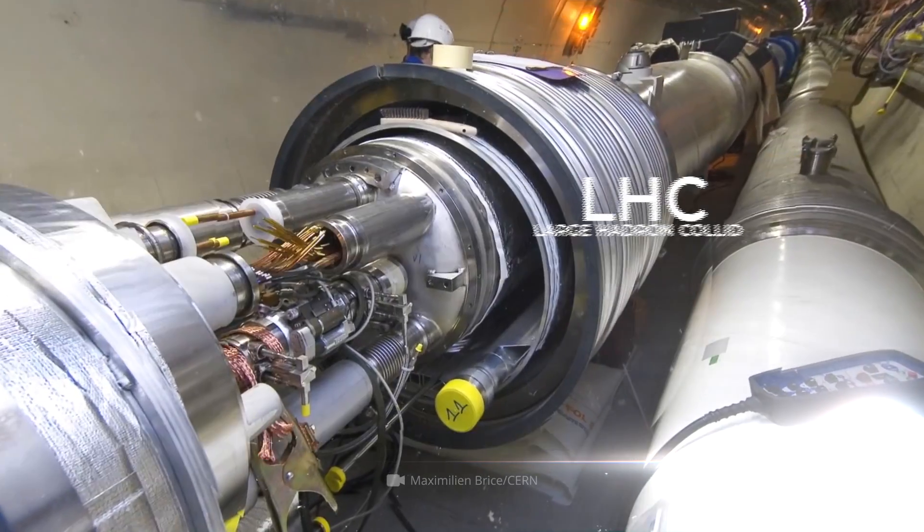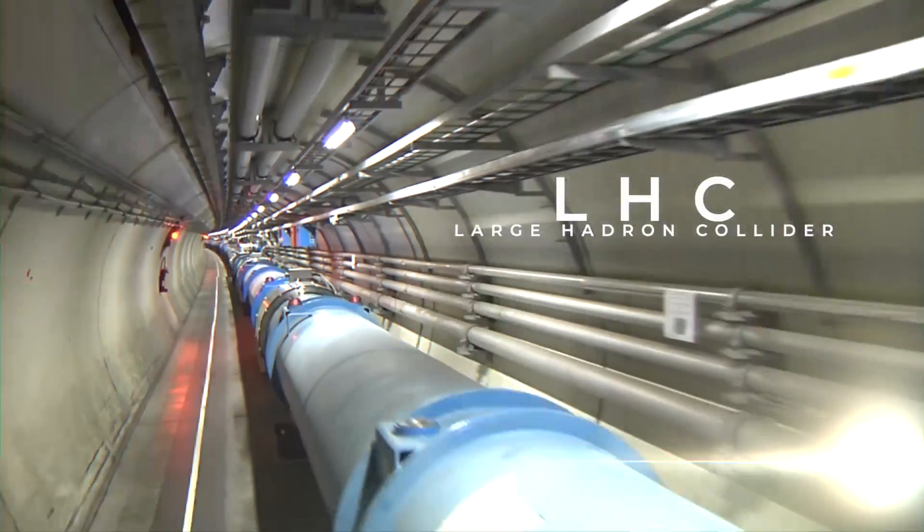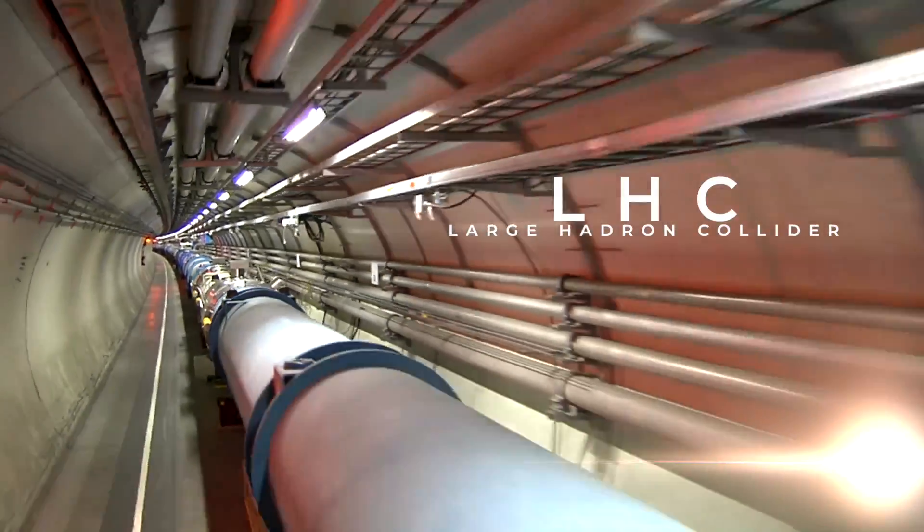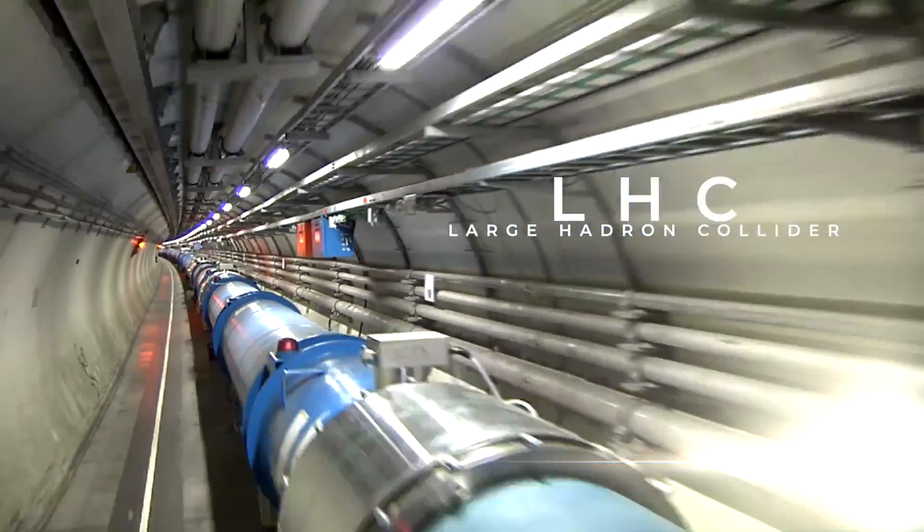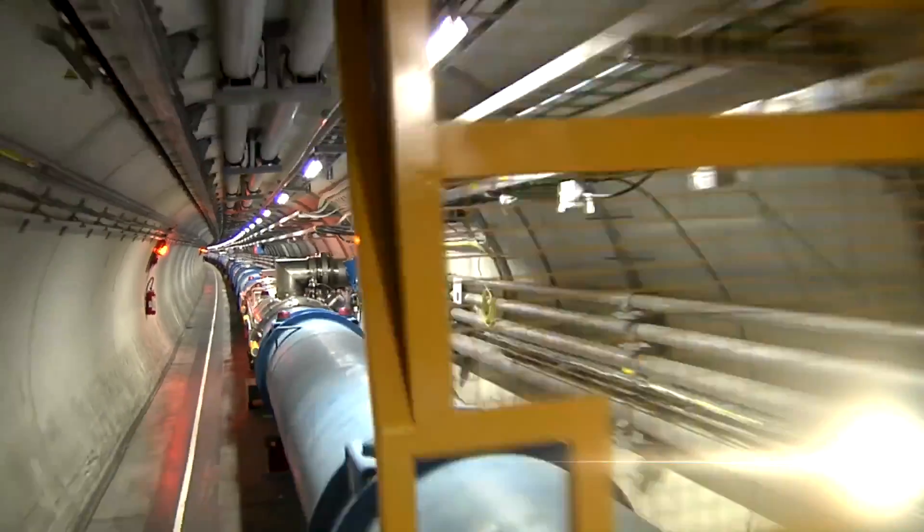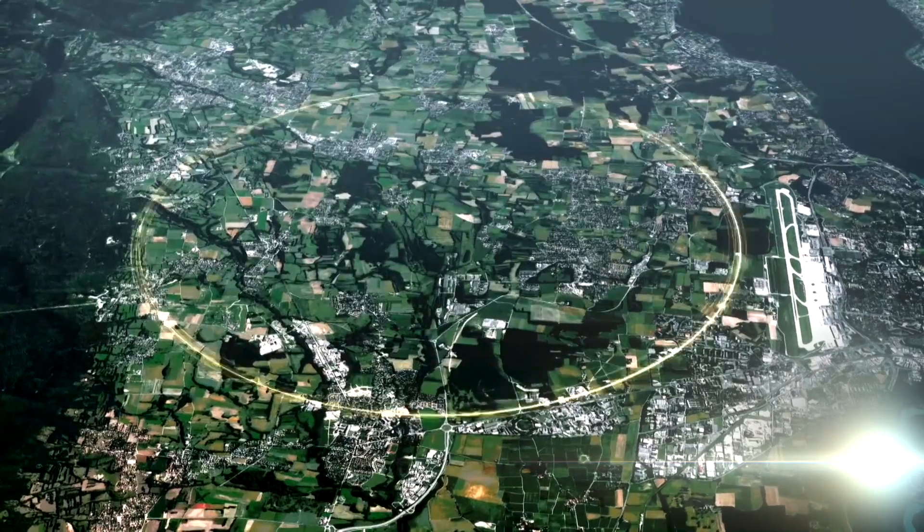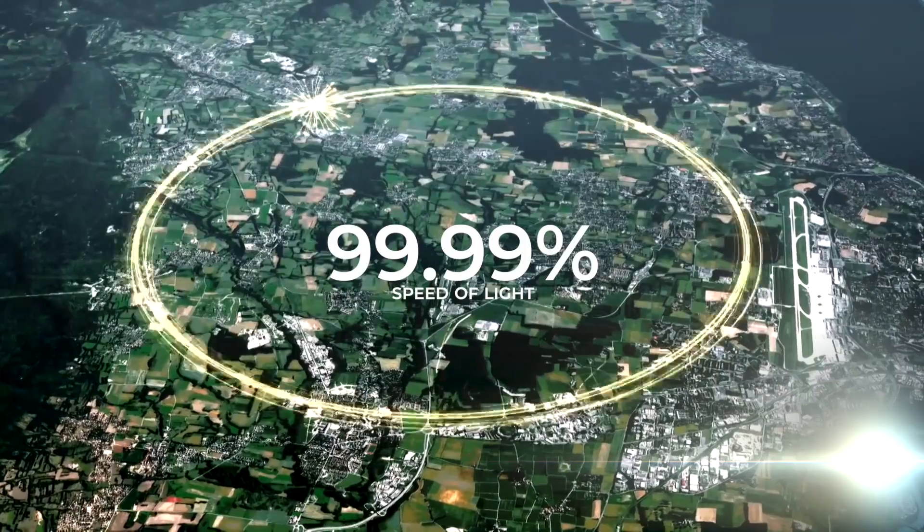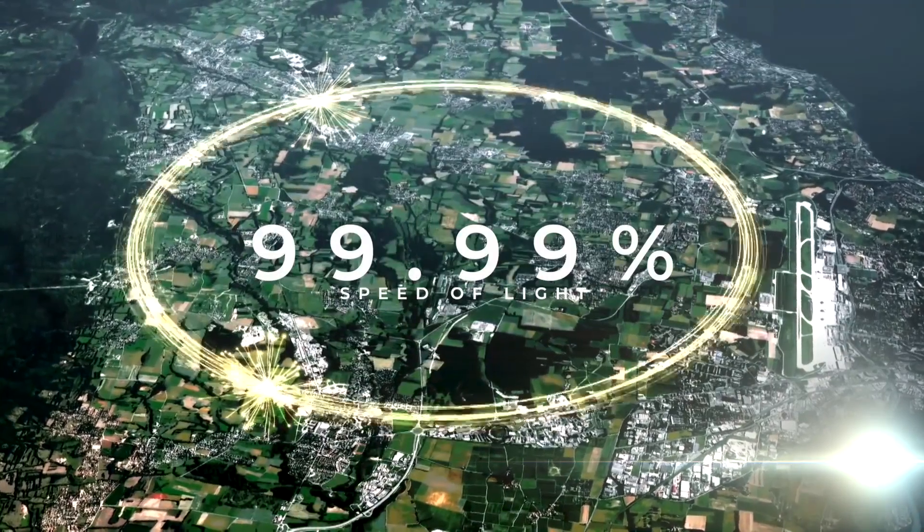The Large Hadron Collider, or LHC, is the world's largest particle accelerator located in Switzerland, and it is designed to accelerate particles in a massive 27-kilometer loop. It can accelerate protons as close to the speed of light as possible, reaching speeds over 99.99% of the speed of light.